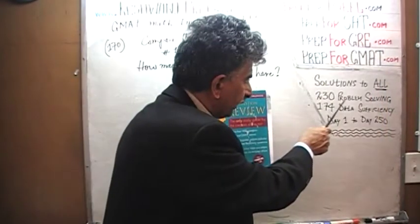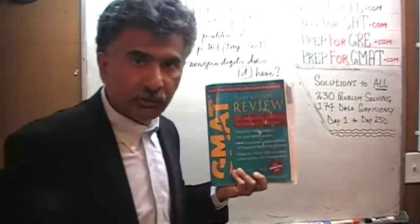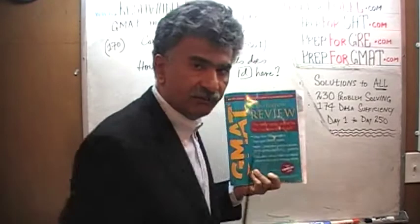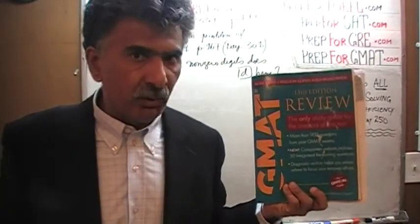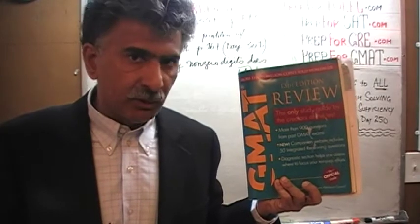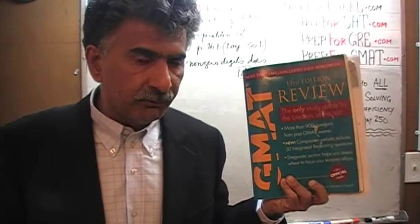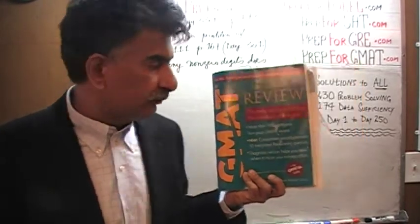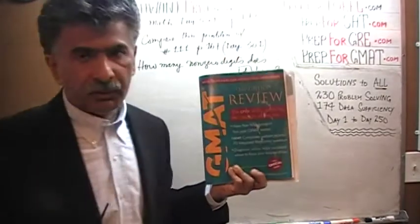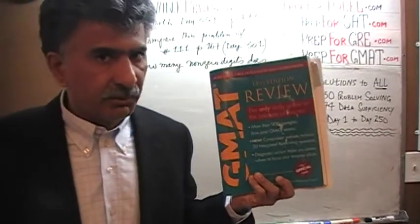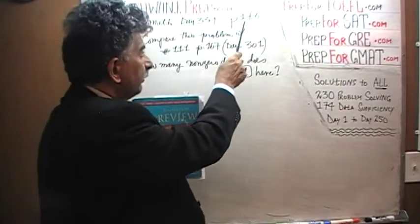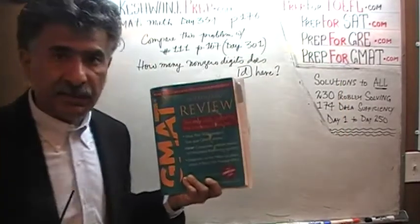The book contains 230 problem-solving questions and 174 data sufficiency questions. We have already solved every single math problem from this book. If you are interested in watching any of the original solutions, you will find them from day number 1 through 250. Right now, we are in the process of redoing the problems, and we are on page number 176.